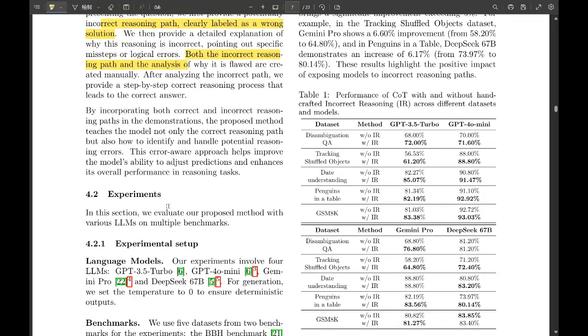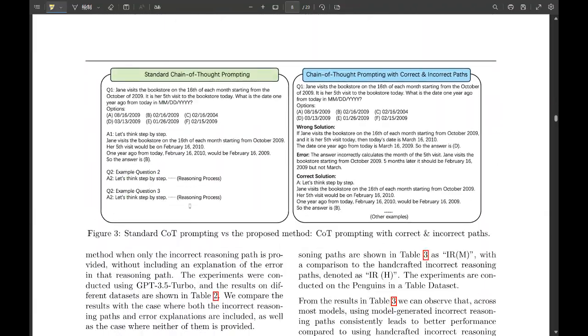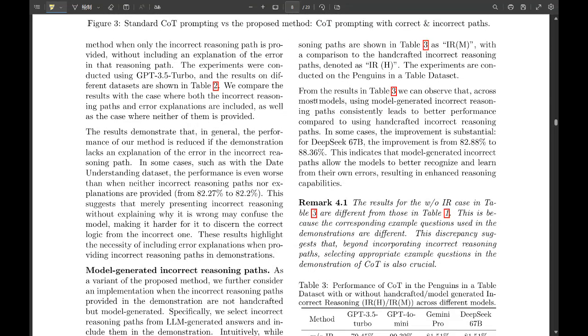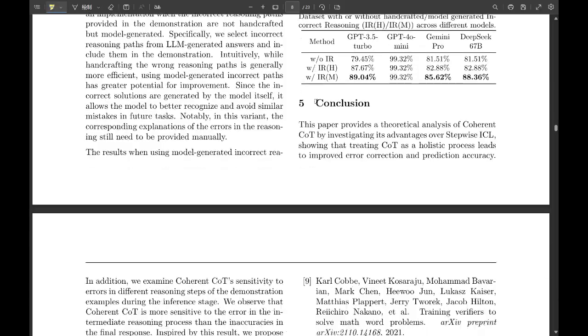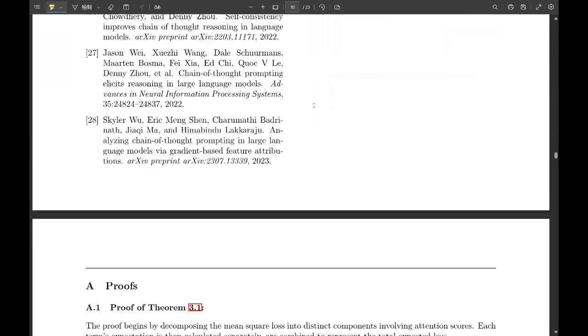So you're basically showing it what not to do. Yeah. And why not? It's like showing a student worked examples alongside common mistakes and explaining why they're wrong. You got it. It's like cognitive immunization. That's a great way to put it. You're giving the LLM a heads up. Yeah, like a warning. So by showing the LLM how easy it is to mess up, it becomes less likely to make those same mistakes. Exactly. It learns from the bad examples. And they tested this out. Oh, did they? Oh, yeah.